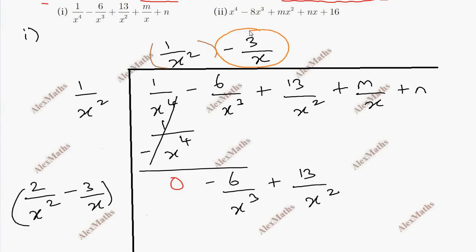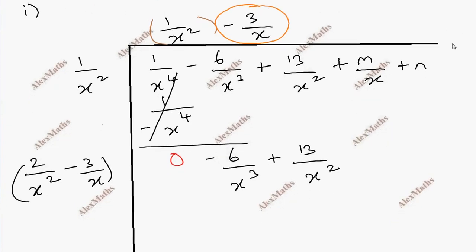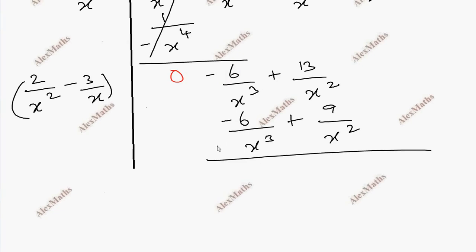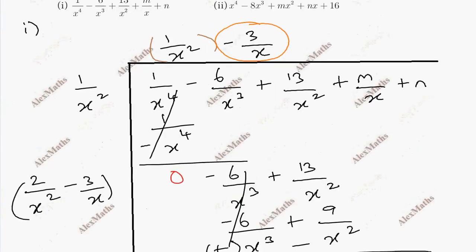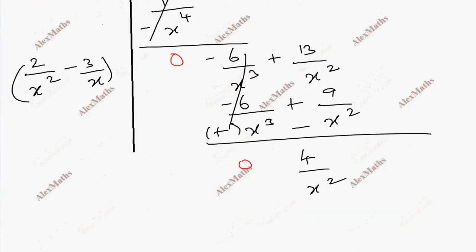So 2 by x² is the divisor term. First, minus 6 by x cube, plus 9 by x square — this is subtracting, sign change, canceling, this is 0. Then 13 minus 9 is 4 by x square.